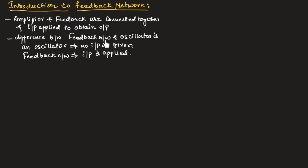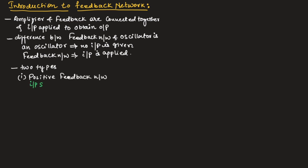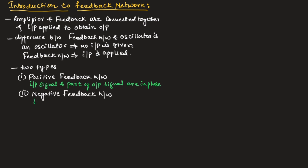The difference between a feedback network and an oscillator is that in an oscillator no input is applied, whereas in a feedback network the input is applied. There are two types of feedback networks: the first is a positive feedback network, in which the input signal and part of the output signal are in phase; and the second is a negative feedback network, in which the input signal and part of the output signal are out of phase.